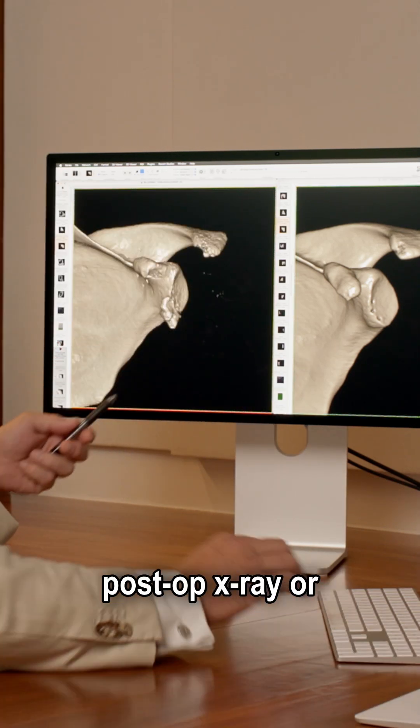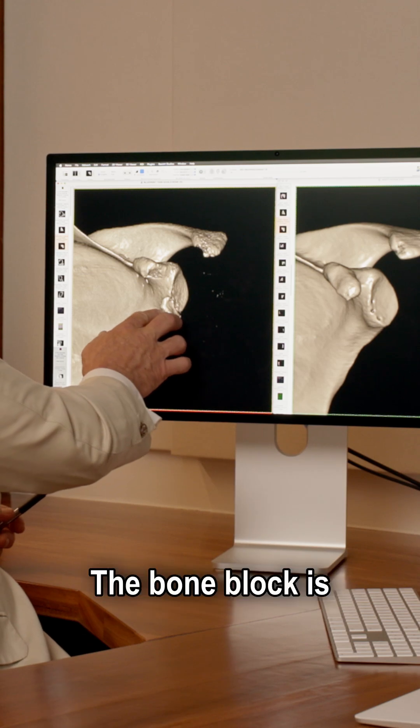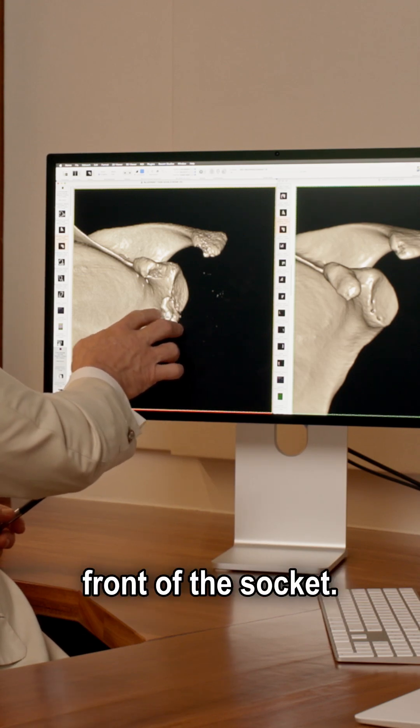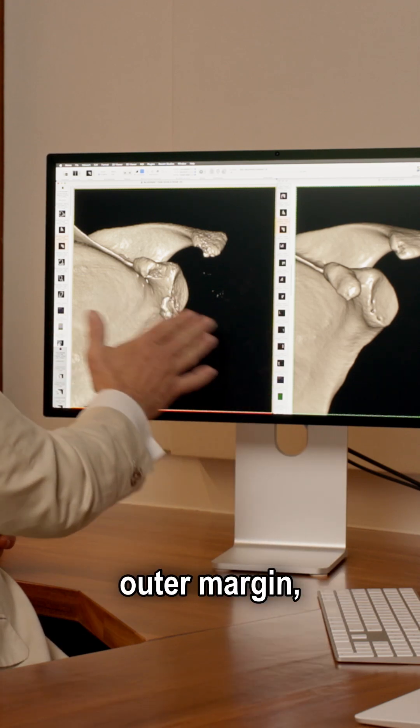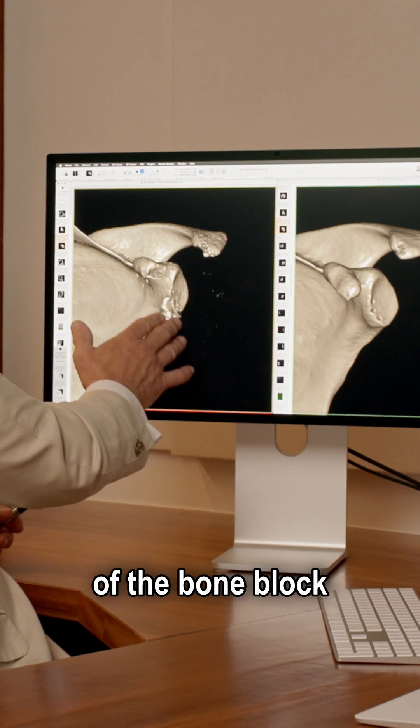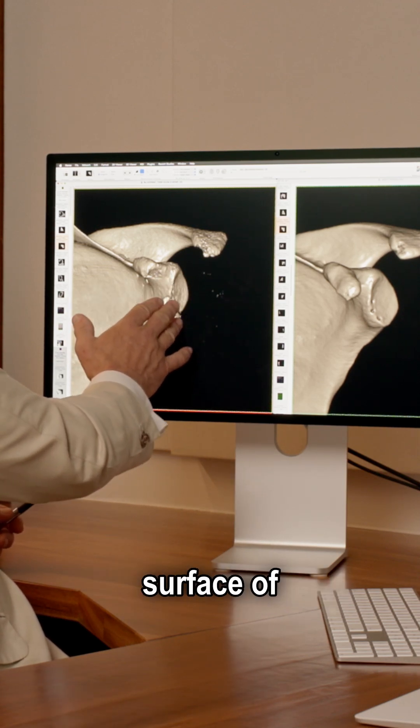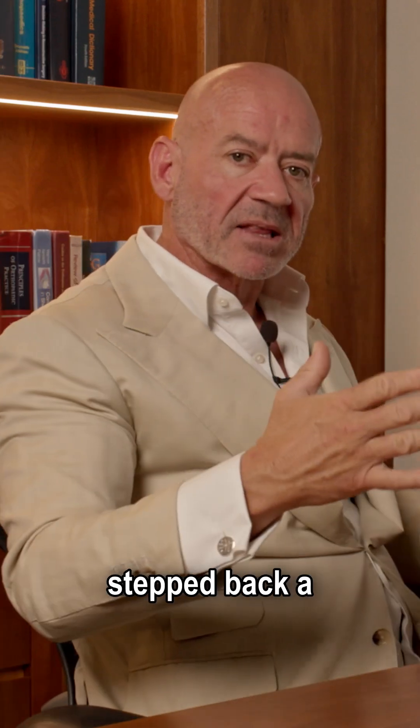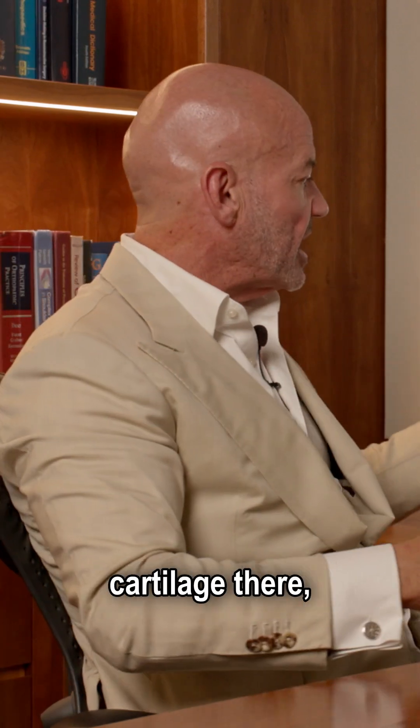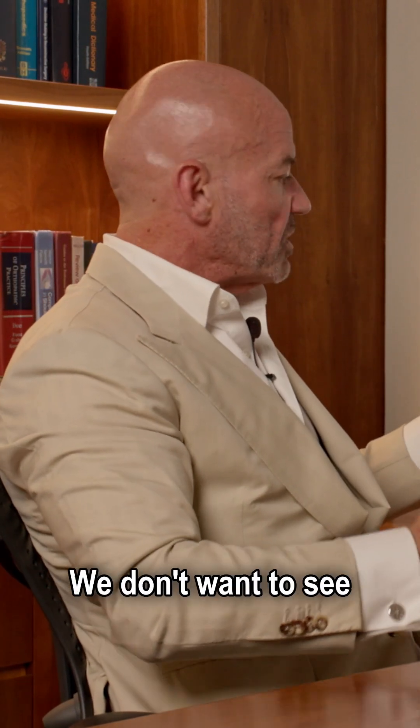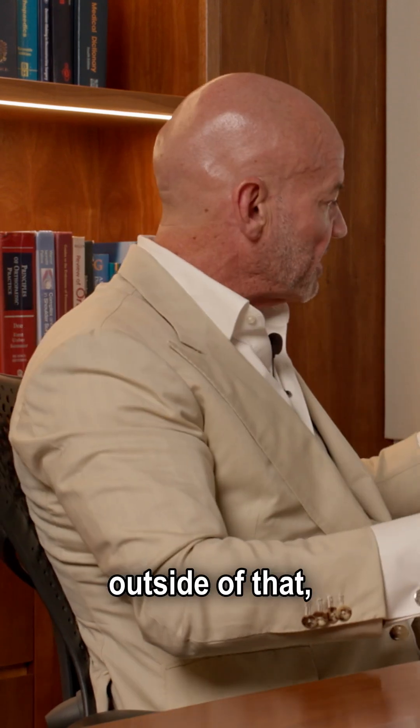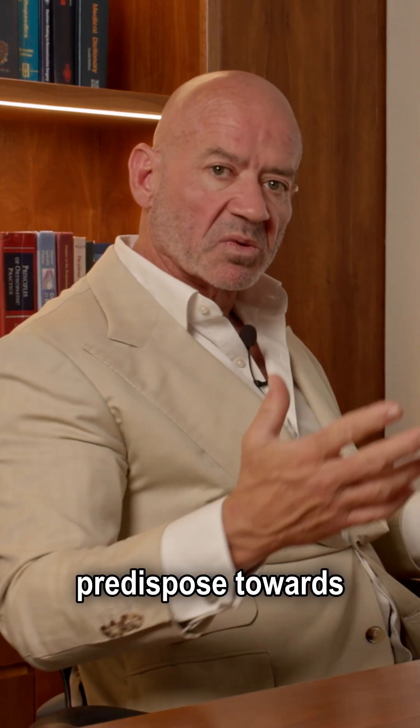This is the six-week post-op CT scan. The bone block is nice and low on the front of the socket. You can see that the outer margin, the lateral margin or the outside edge of the bone block, is level with the surface of the glenoid. That means it's stepped back a little bit because you have a layer of cartilage there, and that's exactly where we want to see it. We don't want to see it any further outside of that because that will predispose towards early arthritis.